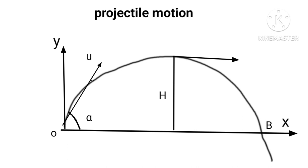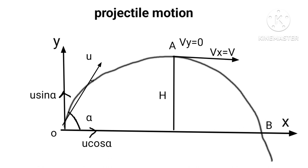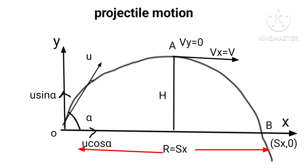Let us now resolve U into its horizontal and vertical components as U cos α and U sin α. When the particle reaches the top at A, the vertical component Vy is 0 and Vx is V. The particle descends and strikes ground level at B where Sx is the chord range R, so R equals Sx.